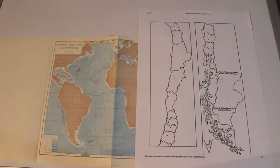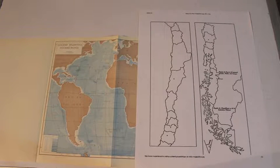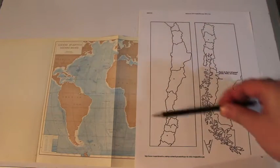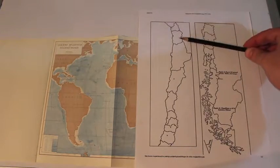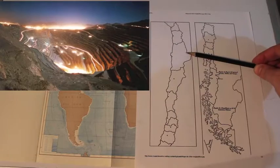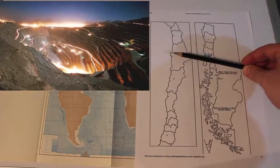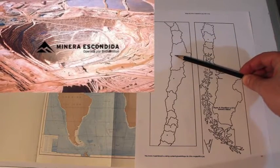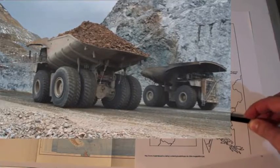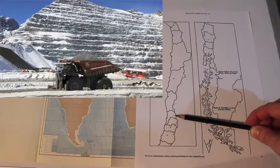What are the main economic activities? The principal economic activity is copper mining in the north and center of Chile. For example, Chuquicamata, La Escondida, Los Pelambres, Los Bronces, and El Teniente.